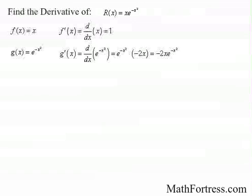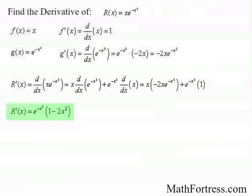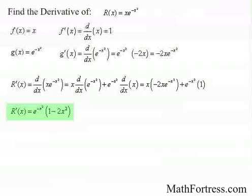Now that we have our derivatives, we can finish applying the product rule. Factoring out an e raised to the negative x squared, we have that the final derivative of r of x is equal to e raised to the power of negative x squared times the quantity 1 minus 2x squared.